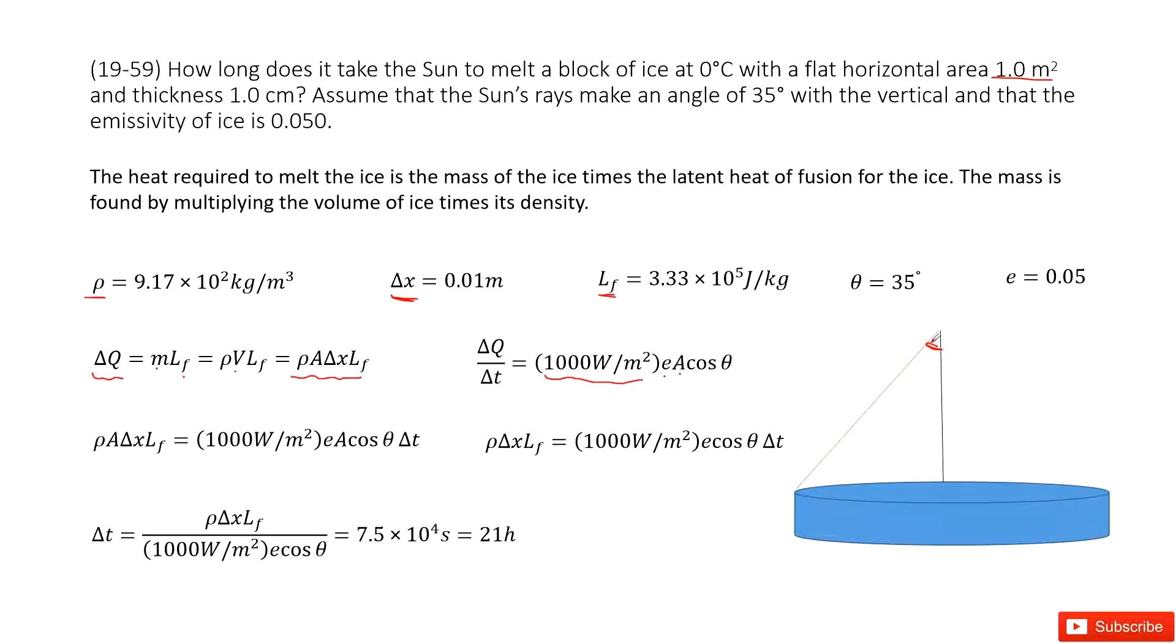Also, there is an angle of 35 degrees. You can see the sun ray travels this way, so we need to project it vertically. We consider the cosine theta.